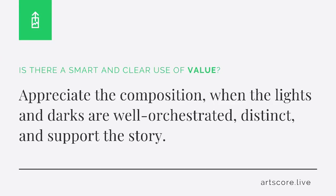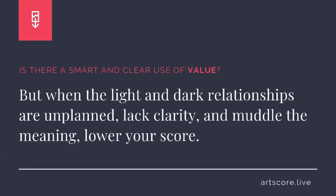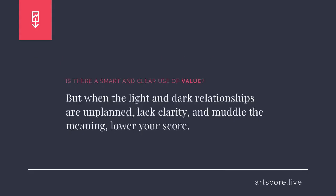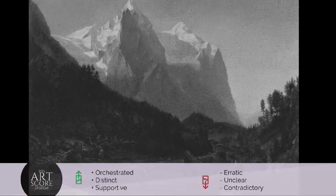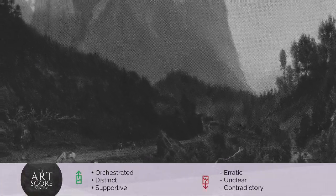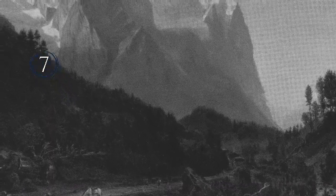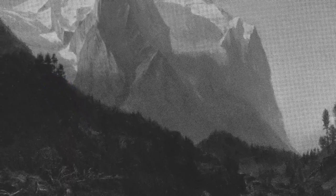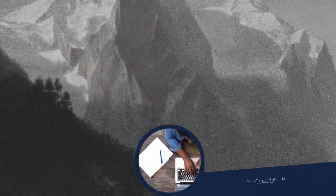Value. Is there a smart and clear use of value? Appreciate the composition when the lights and darks are well orchestrated, distinct, and support the story. But when the light and dark relationships are unplanned, lack clarity, and muddle the meaning, lower your score. I scored the artwork a 7. I see the values support the subject and remain clear when squinting your eyes. What's your score?